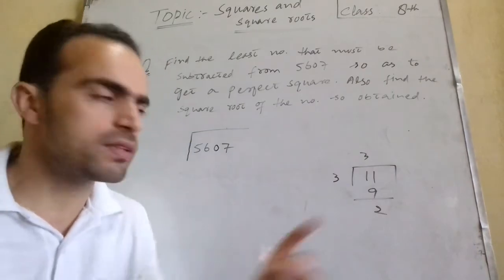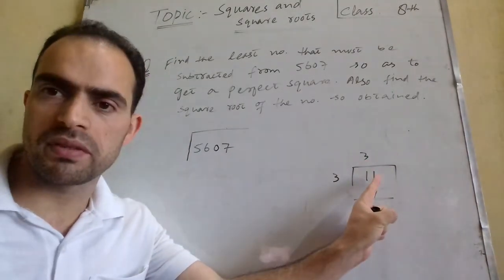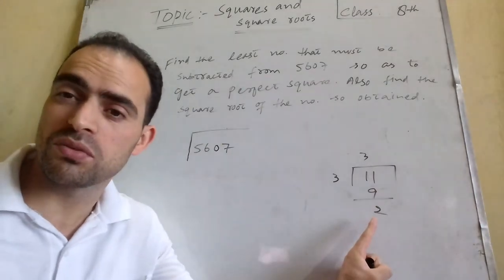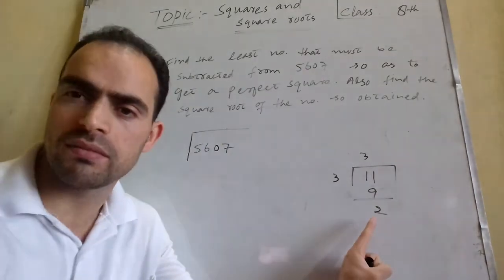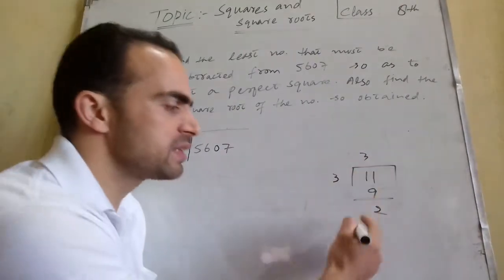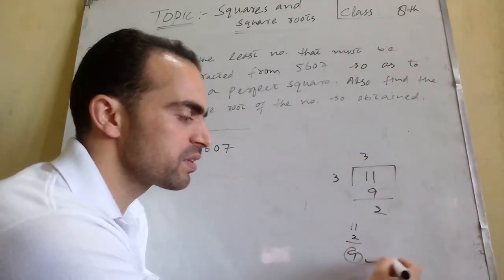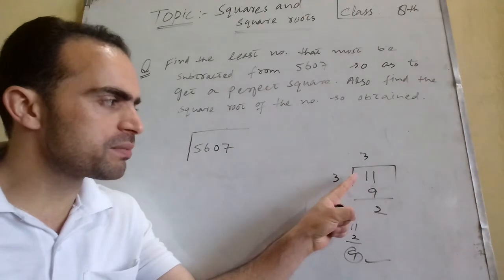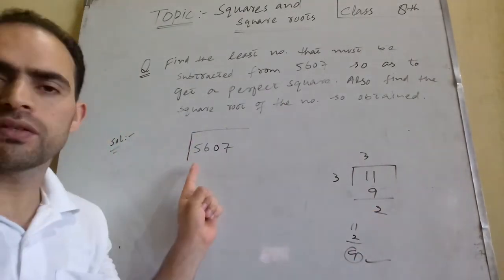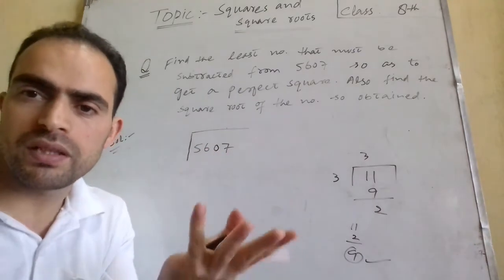The remainder here is 2. It means this 2 must be subtracted from the given number to make it a perfect square: 11 − 2 = 9, and 9 is a perfect square. So the number that must be subtracted is 2. Similarly, our main question asks: what is the least number that must be subtracted from the given number so as to get a perfect square?